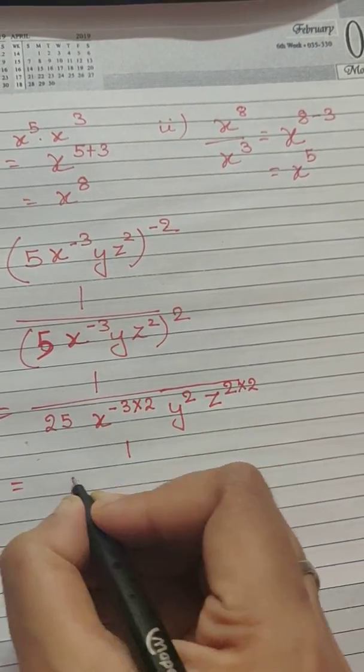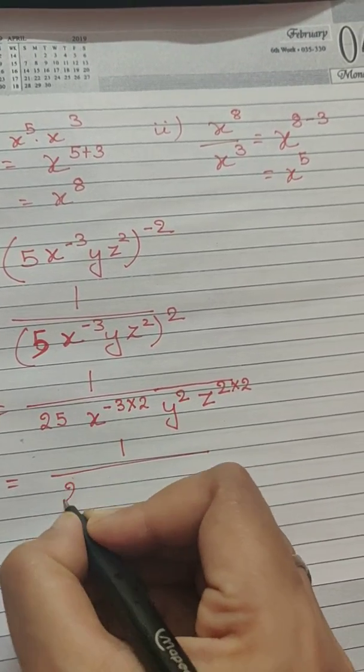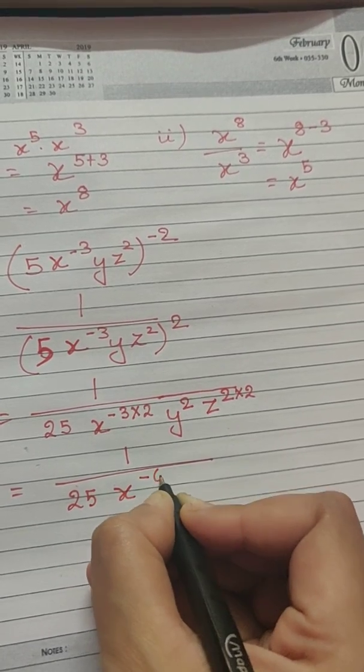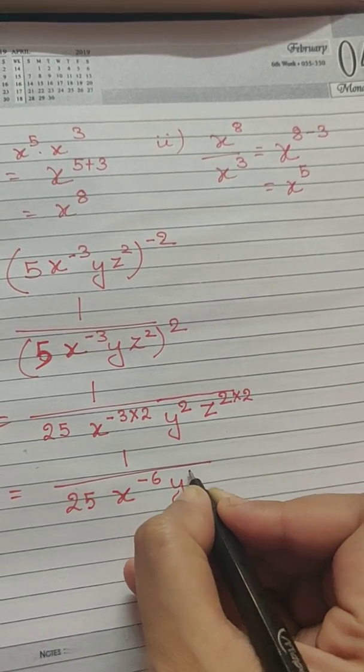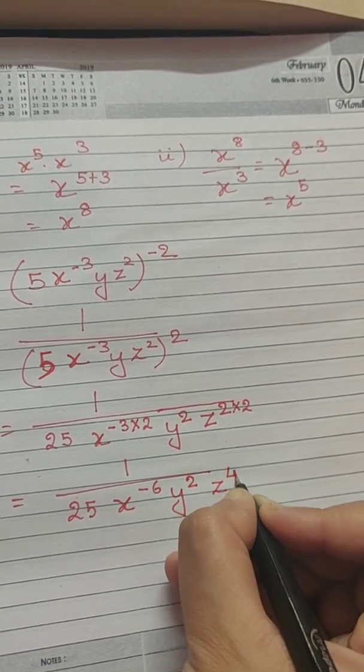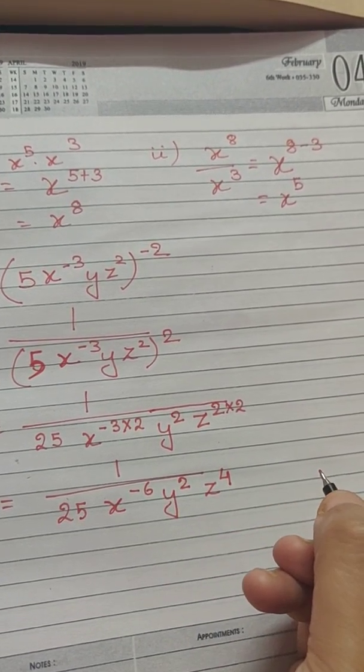So finally what we get is 1 by 25 x to the power minus 6 y to the power 2 and z to the power 4.